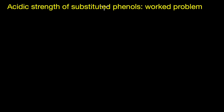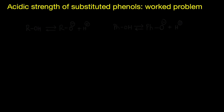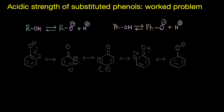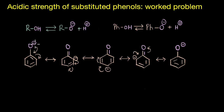We know that phenols are more acidic than alcohols, because on ionization the phenoxide ion formed is much more stable than the alkoxide ion formed. As you can see here, the negative charge in the phenoxide ion is stabilized through resonance, whereas no such resonance stabilization exists in the case of the alkoxide ion.